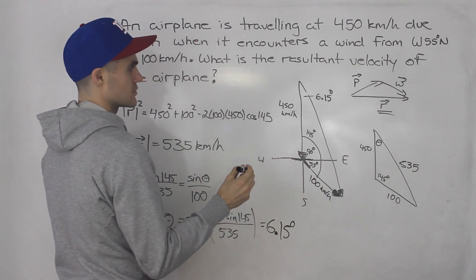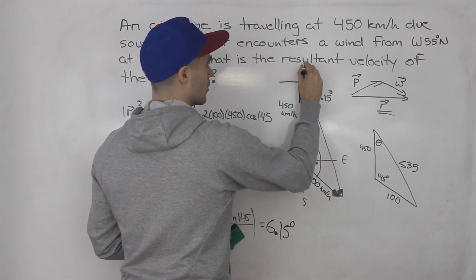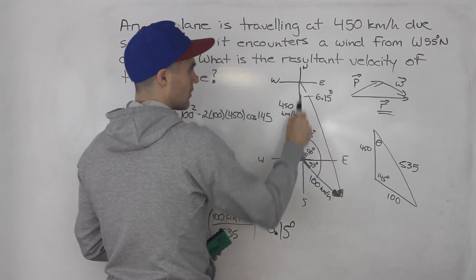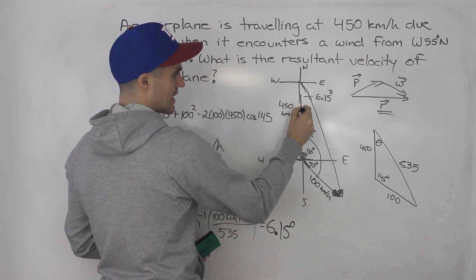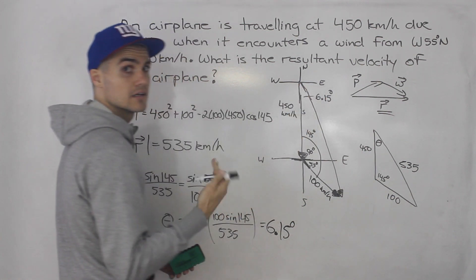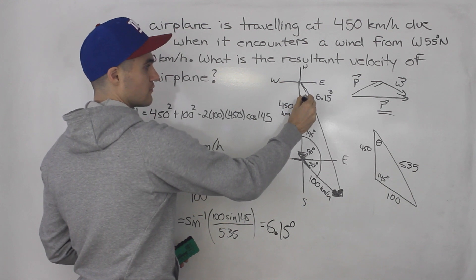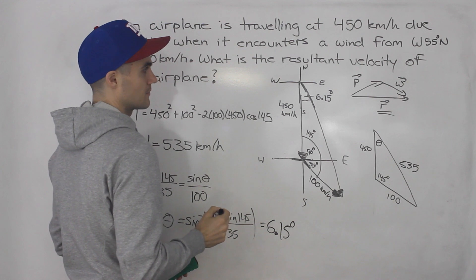So how can we state that as a direction? Well, if we draw a compass here, we got north, east, west, and then this is going south. So this direction here is going to be what? South 6.15 degrees towards the east, right? South 6.15 degrees towards the east for the direction of this vector here.